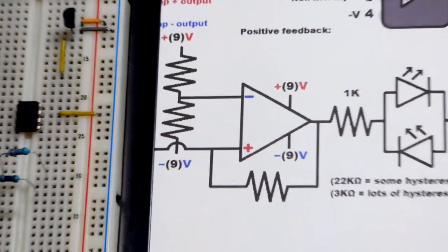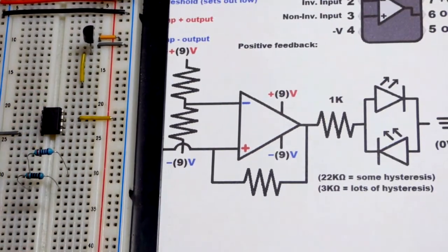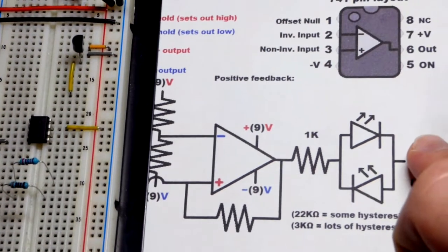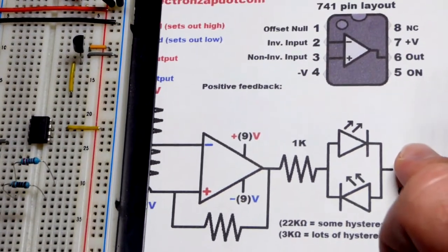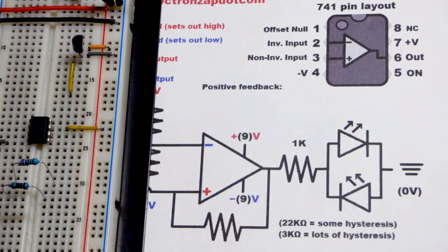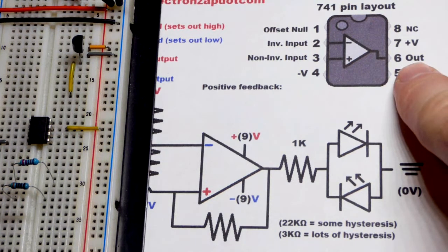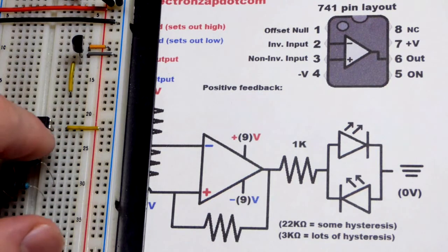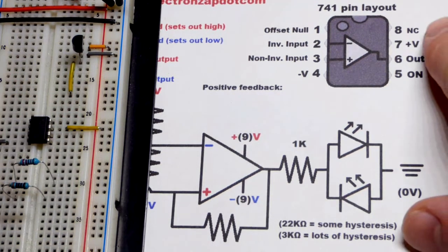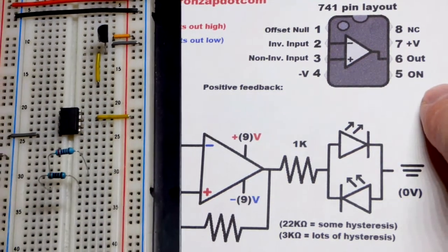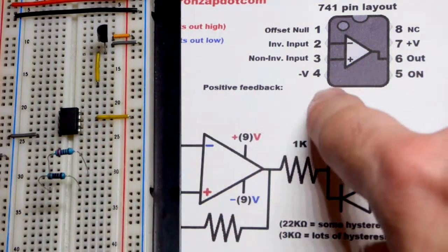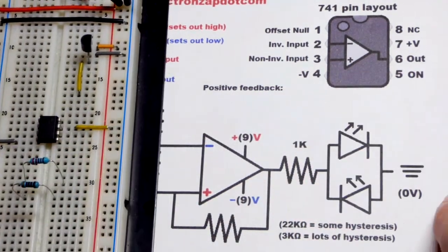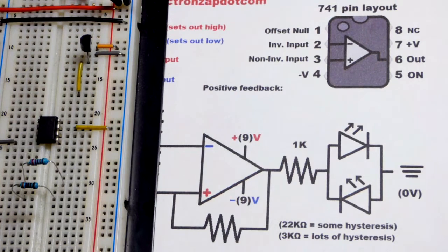We'll use this schematic with the 741 op-amp. Let me get the pin layout. The output is pin six, third pin down. We got the positive supply pin seven, the negative supply pin number four.